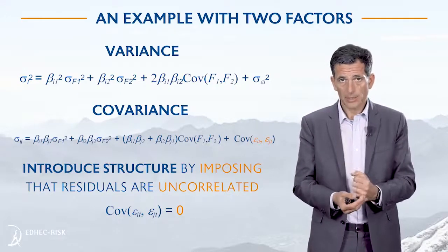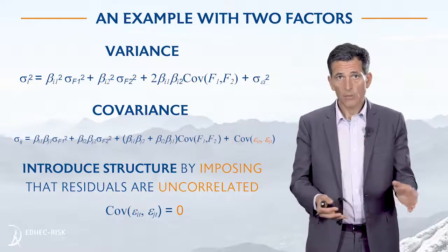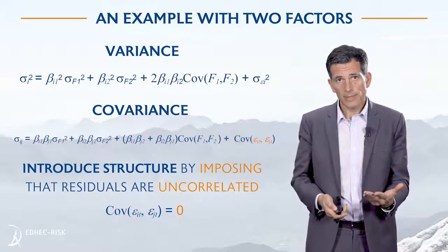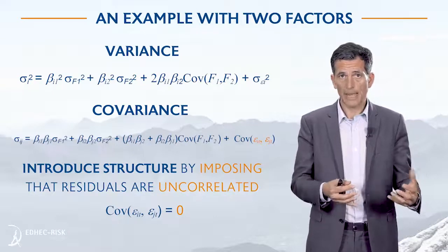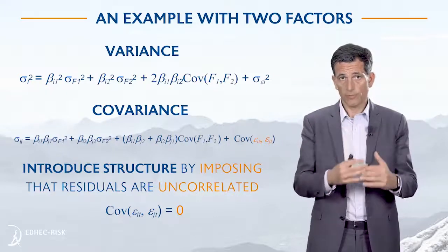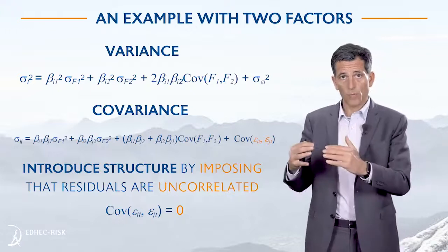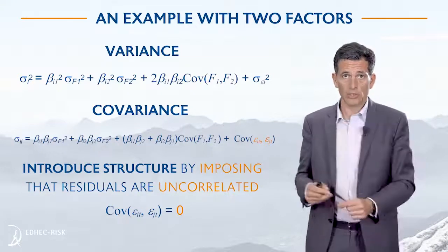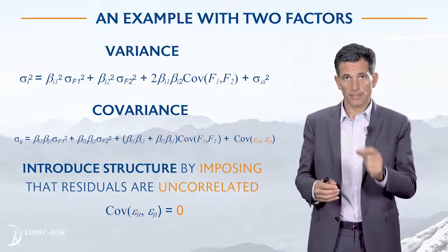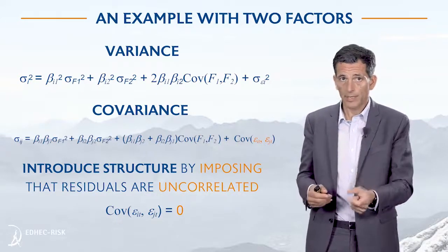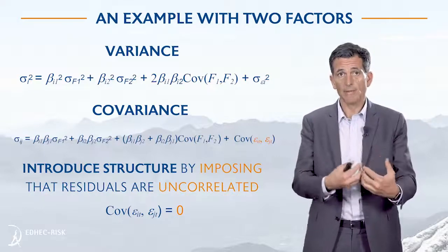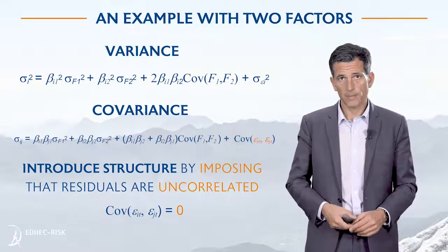The key assumption here — and that's where we're introducing some kind of model risk — is we're assuming away the correlation between specific returns. When you think about it, if your factor model does a good job at capturing the commonalities in stock returns, then by definition whatever remains is actually specific to stock i and stock j. So if your factor model is well specified, assuming that the specific components are uncorrelated is not too bad of an assumption, because everything they have in common has already been taken care of by the factor model.